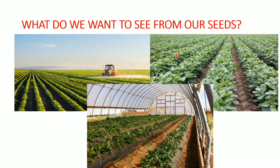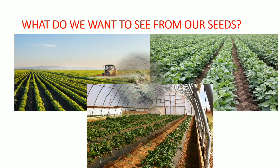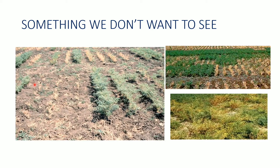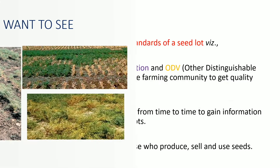The farmer expects uniform germination and uniform resistance against disease and insects. However, another scenario is one the farmer would not like to see - a non-uniform field plot where some seeds are ungerminated, some are not vigorous. This usually happens because of lack of seed testing and lack of seed standards in the seed lot that the farmer buys.